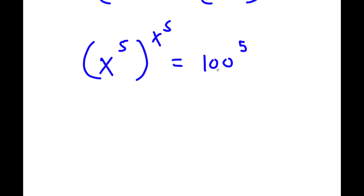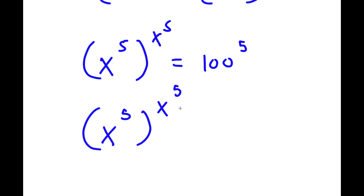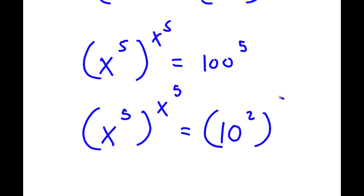And this is equal to 100 to the power of 5. Now, 100 is the same thing as 10 to the power of 2. So now I have x to the power of 5 to the power of x to the power of 5 is equal to 10 to the power of 2 to the power of 5.